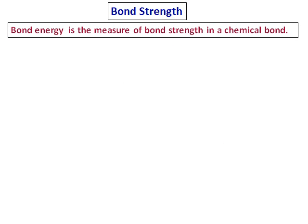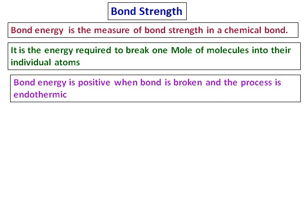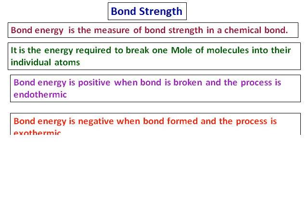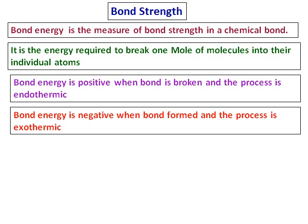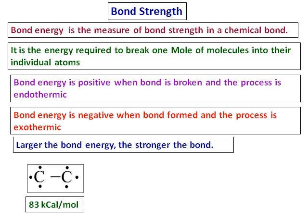After bond length, let's look at the strength of the bond. The strength of a bond is measured by bond energy, which is the energy required to break one mole of a molecule into its individual atoms. Bond energy is positive when a bond is broken — an endothermic process — and negative when a bond is formed — an exothermic process. The larger the bond energy, the stronger the bond.